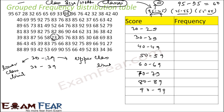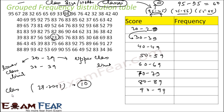The class size needs a small adjustment here. You'll notice the data is non-overlapping — one class ends at 29 and the next starts at 30. There is an issue with this, which we will discuss. For a non-overlapping class, the class size is calculated as: 29 minus 20 plus 1, which equals 10.